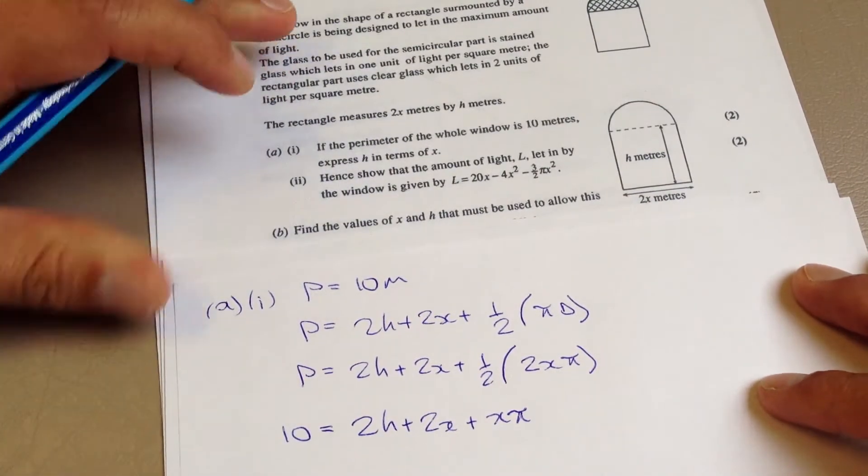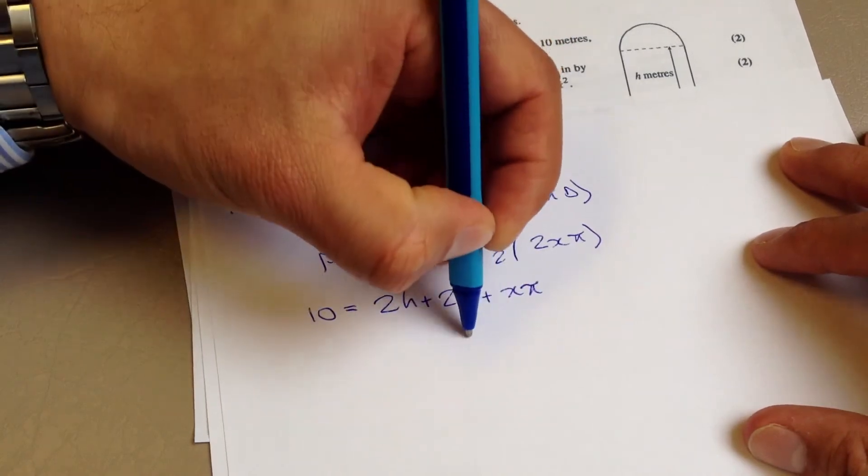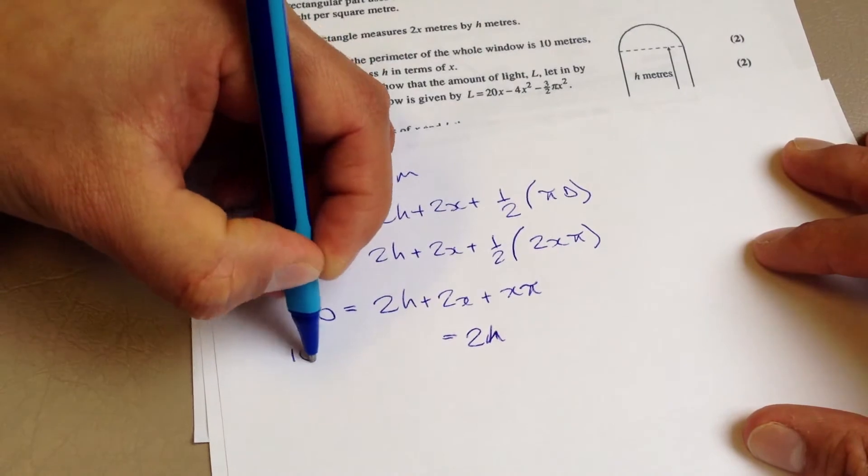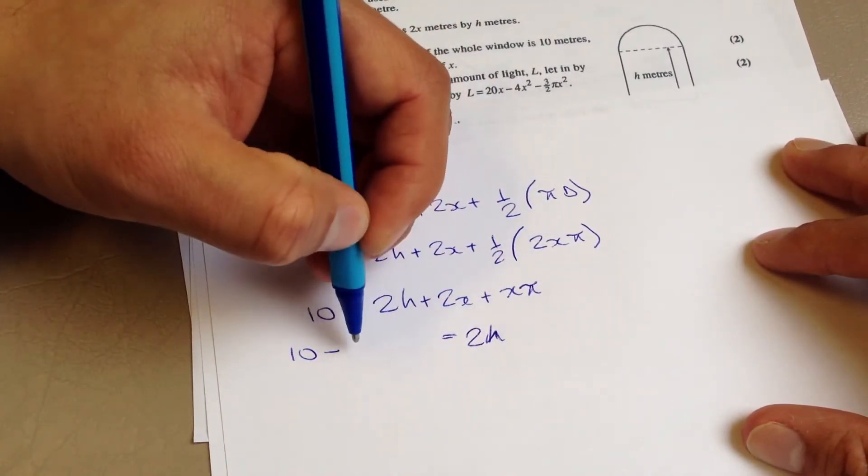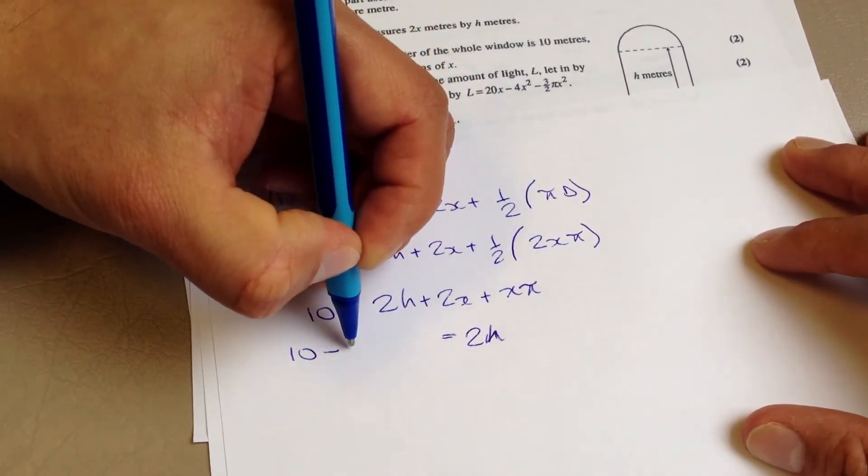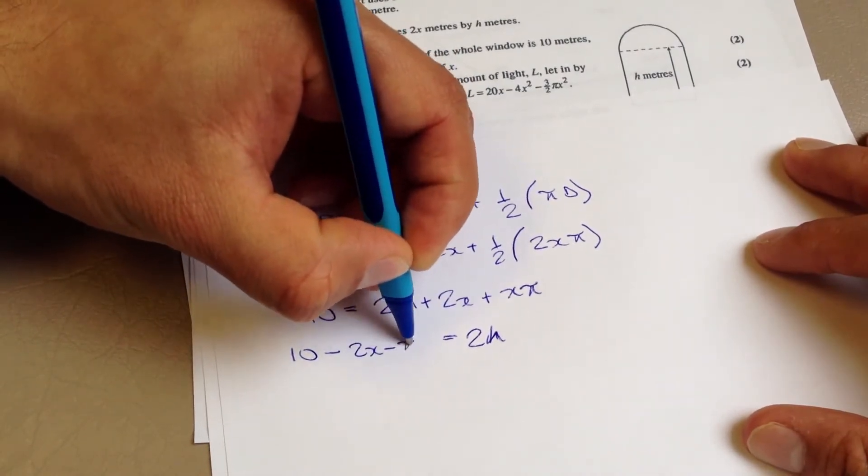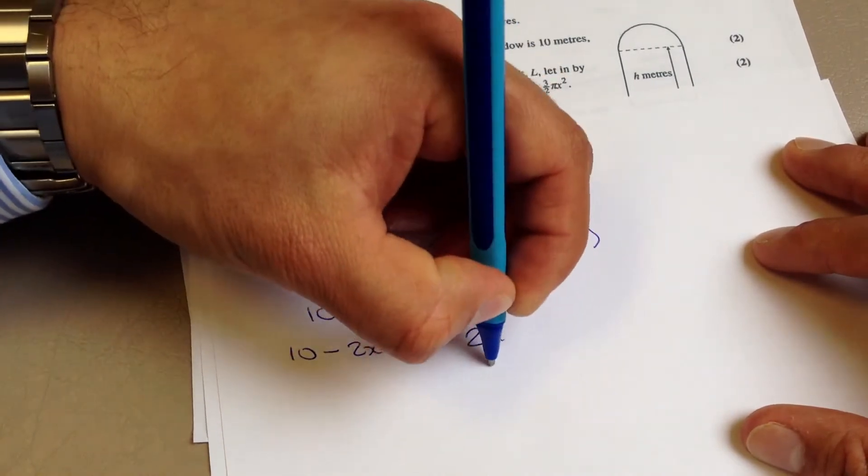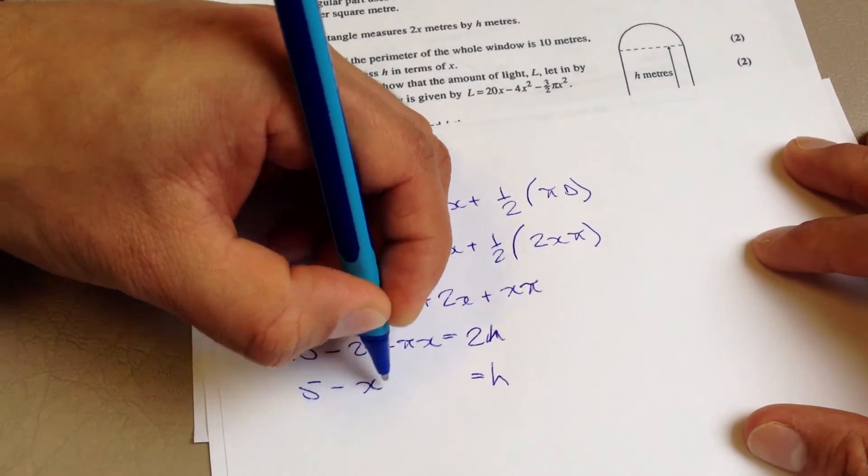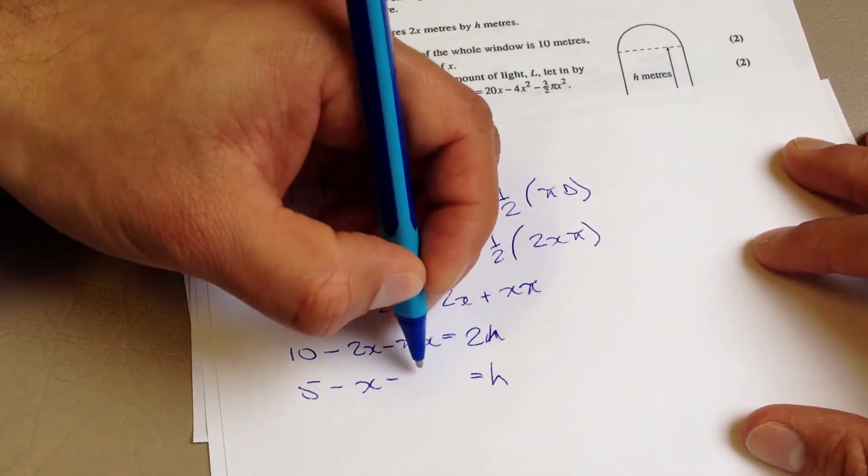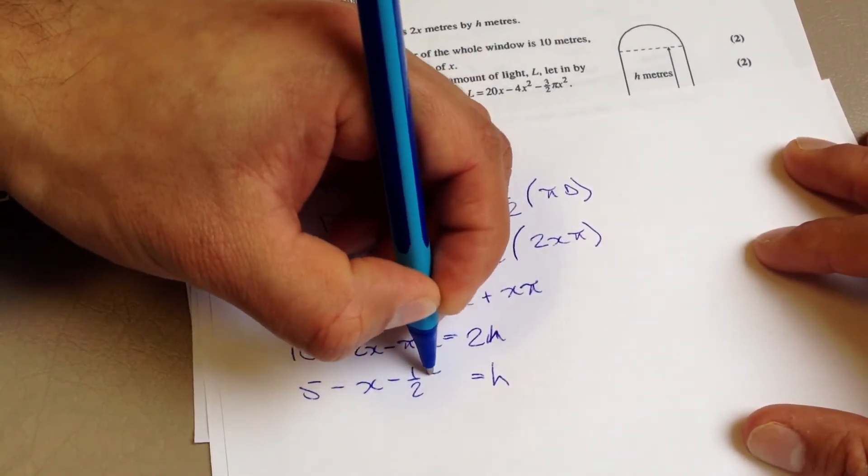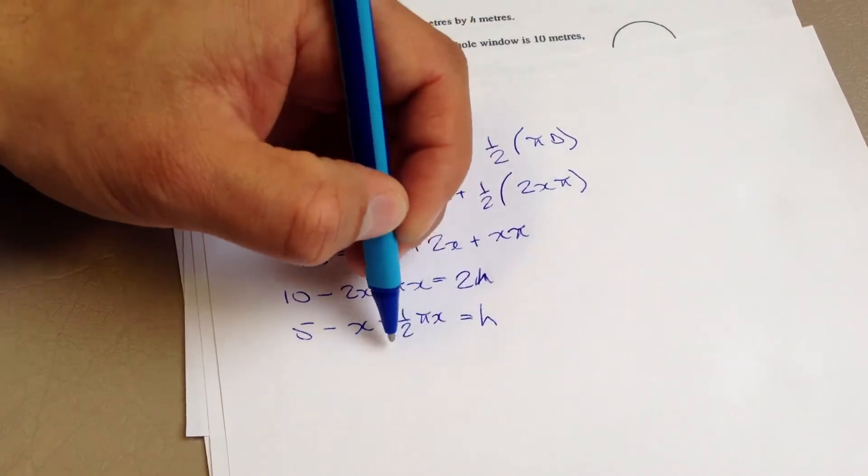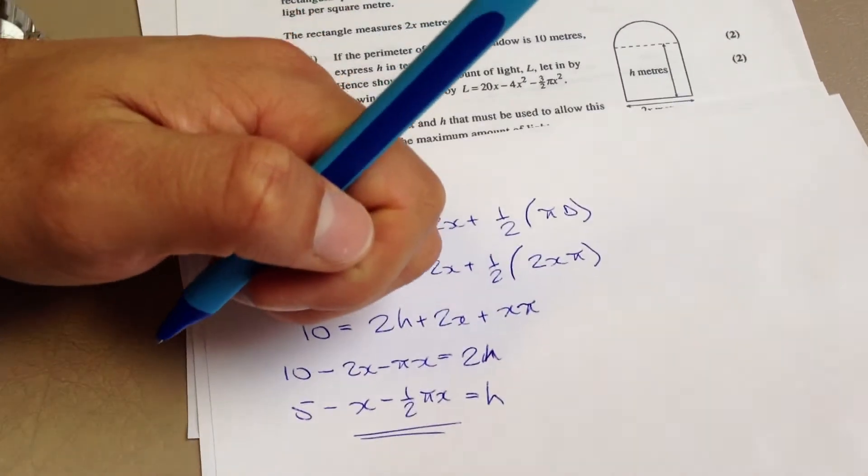Let's rewrite this for 2h now. So 2h, keep it on the right-hand side, take these two things over, will be 10, subtract 2x, and subtract pi x. Subtract 2x, subtract pi x. Let's half everything. So that means h will just be 5, subtract x, subtract a half pi x. And that's pretty much it. We have an expression for h.